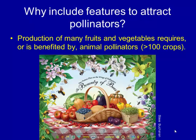So why do you want to spend your time trying to attract pollinators? Well, if you're gardening with fruits and vegetables, many of them either require animal pollinators or are benefited by animal pollinators. This poster done several years ago by the North American Pollinator Protection Campaign illustrates a lot of our common fruits and vegetables that are animal pollinated. In the U.S., there are over 100 crops that are animal pollinated, and the value of pollinators is around $30 billion in crops.